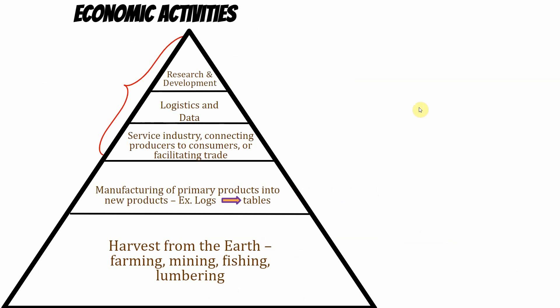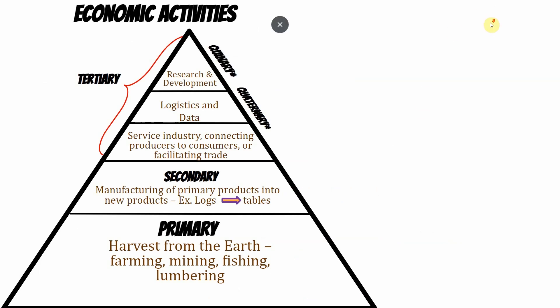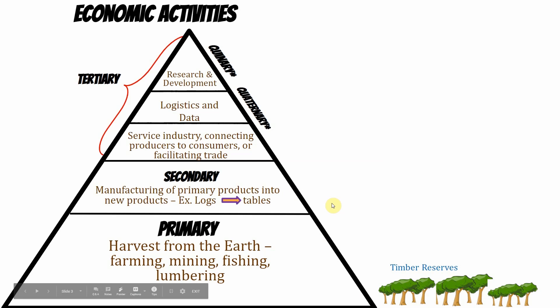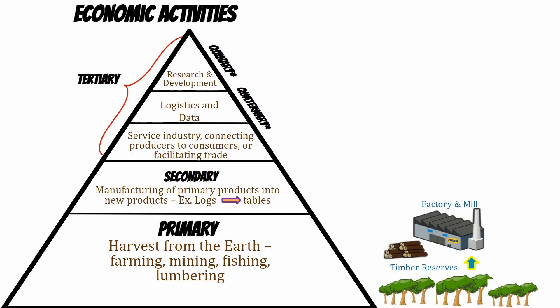Coach White's favorite things are Polar sparkling water and IKEA. IKEA furniture is mostly made out of wood, so lumberjacks work in the primary sector with timber reserves. Then people don't want to buy a tree — they want to buy a table. The logs get to the factory mill, which is the secondary sector, where IKEA mills wood from logs into functional chairs at a valuable price.